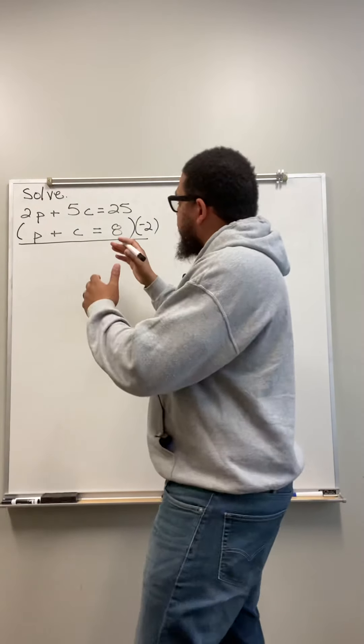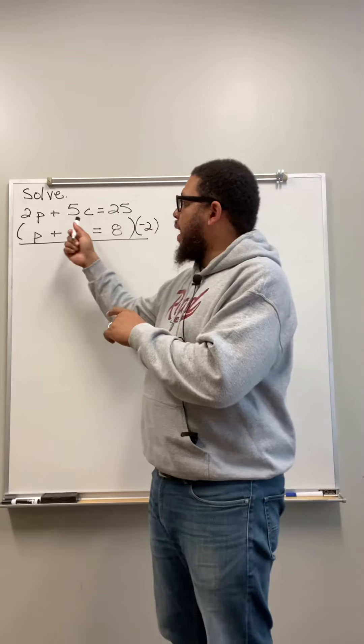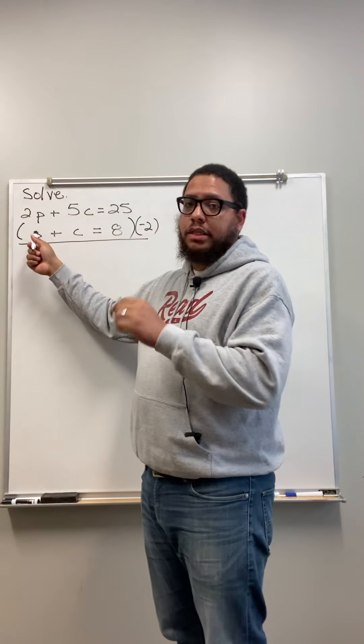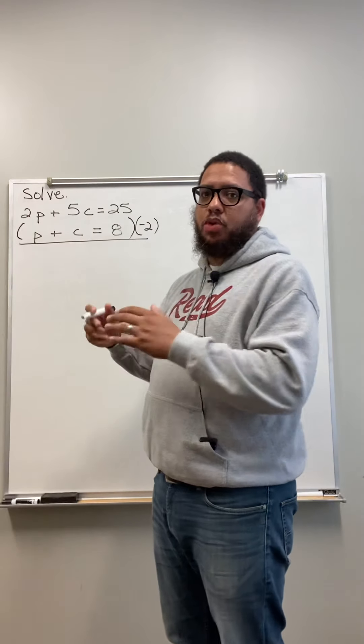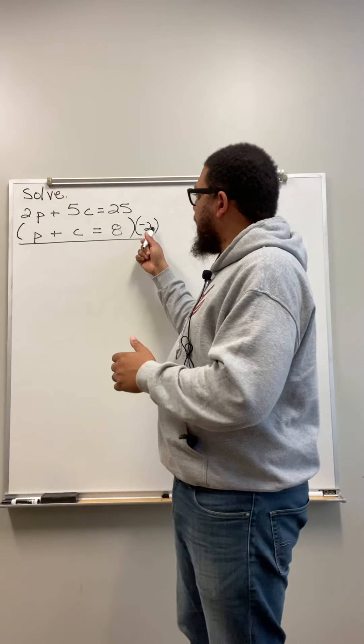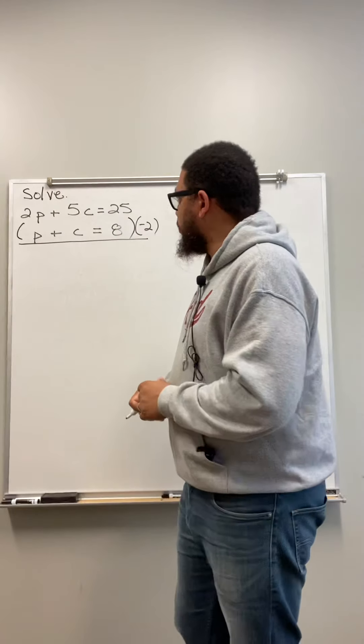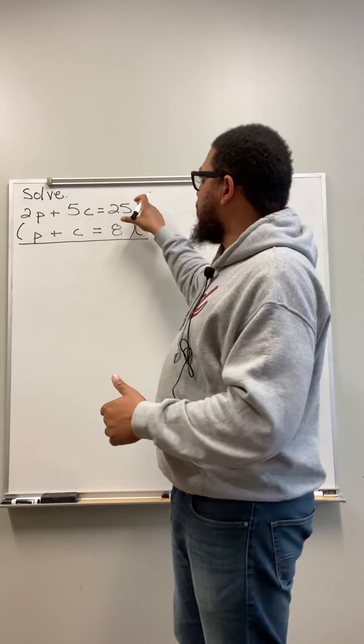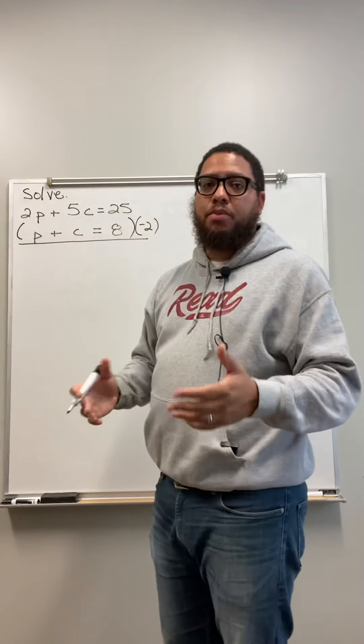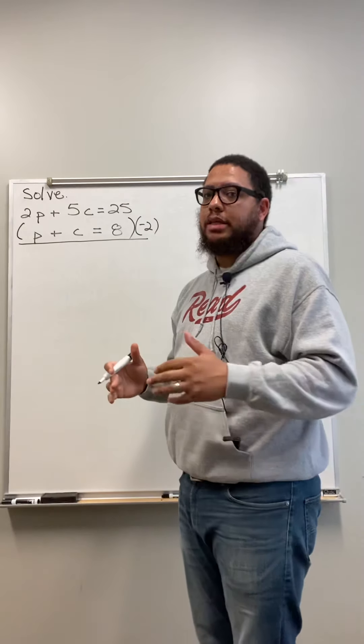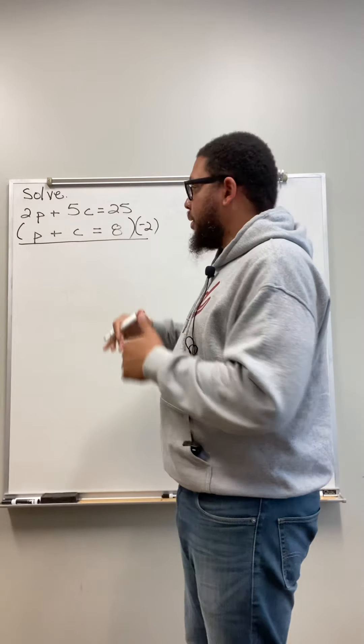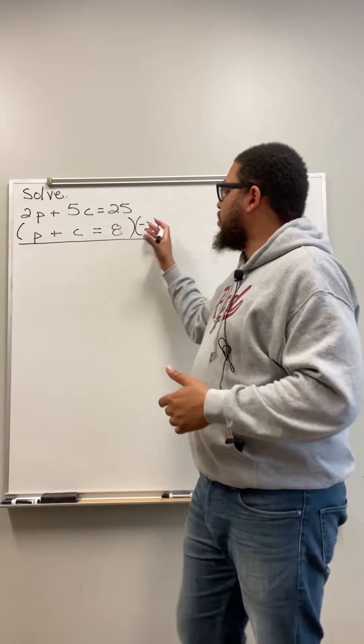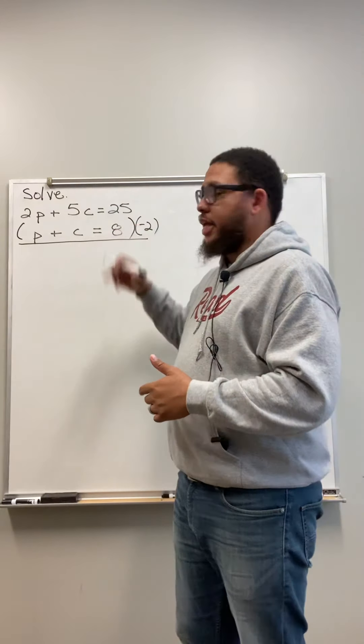So now, you also got to remember, you don't just multiply this number by what you're trying to cancel out. You have to multiply everything in that equation to keep the equation balanced. You have to multiply everything in this equation by the negative 2. So what I'm going to do next is, I'm going to rewrite the top equation. Because in this example, we don't have to multiply the top equation by anything. There are some problems where you'll have to multiply both equations by certain numbers. But in this particular problem, we only need to multiply the bottom equation by this negative 2.